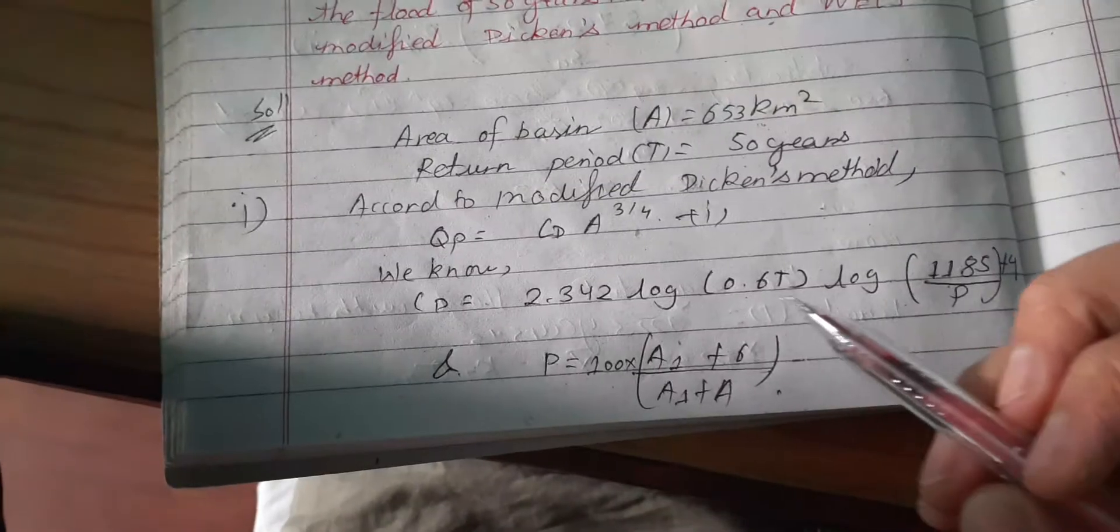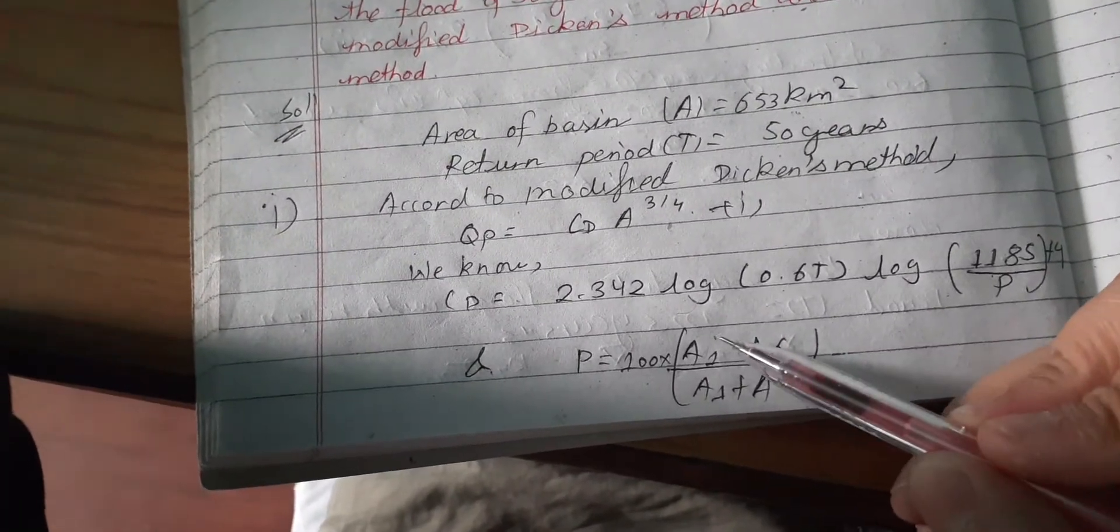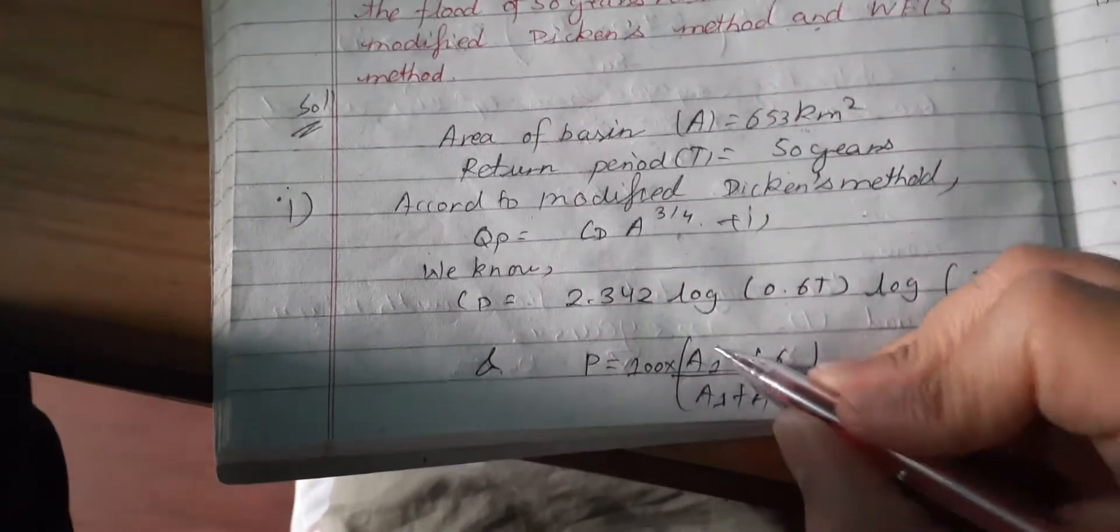The P parameter is: P = 100 × (A₁ + 6)/(A₁ + A) where A₁ is the snow area.